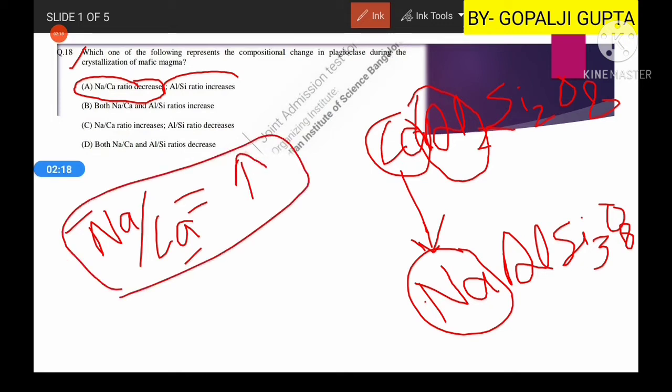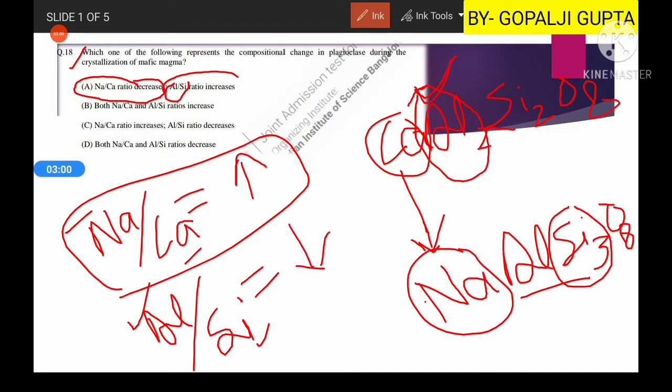Then let us see the other ratio, aluminium to silicon. Here the aluminium is 2 and here the aluminium is 1. With passage of time aluminium will decrease in our melt composition, and at the same time the proportion of silica will increase. If aluminium is decreasing and silica is increasing, definitely the ratio will decrease. Option number third: Na to Ca ratio will increase and Al to Si ratio will decrease.